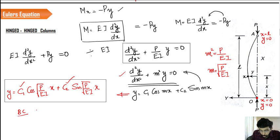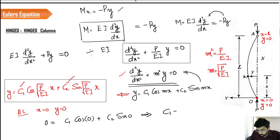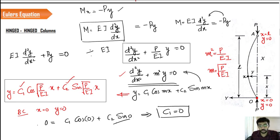Let us apply the first boundary condition: at x = 0, y = 0. Substituting into the solution: C₁·cos(0) + C₂·sin(0) = 0. Since sin(0) = 0 and cos(0) = 1, this gives C₁ = 0. So we have obtained the first constant as zero.